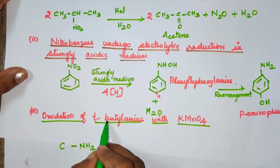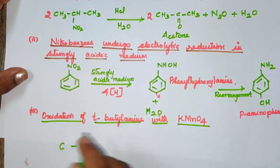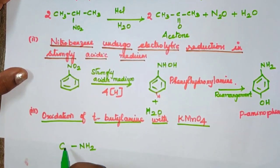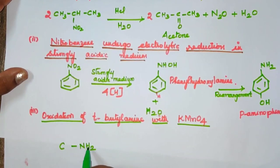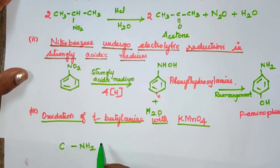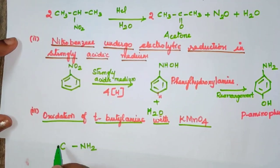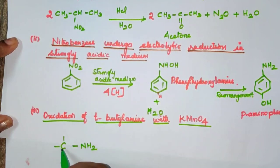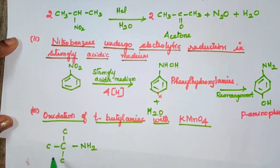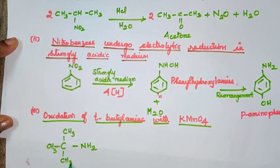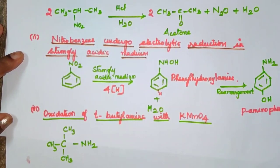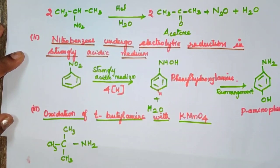Butyl has 4 carbons total — 1 carbon bearing the NH2 plus 3 other carbons. Nitrogen satisfies 3 bonds with 2 hydrogens. All bonds are satisfied in this structure, so this is tertiary butylamine. I am using the name of the reactant as given in the question.